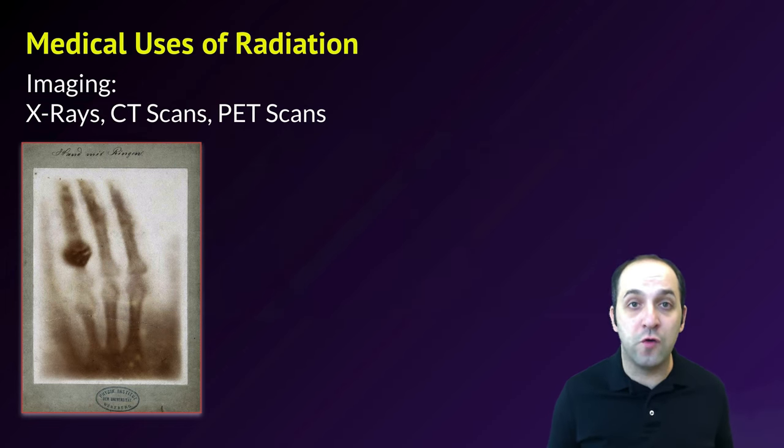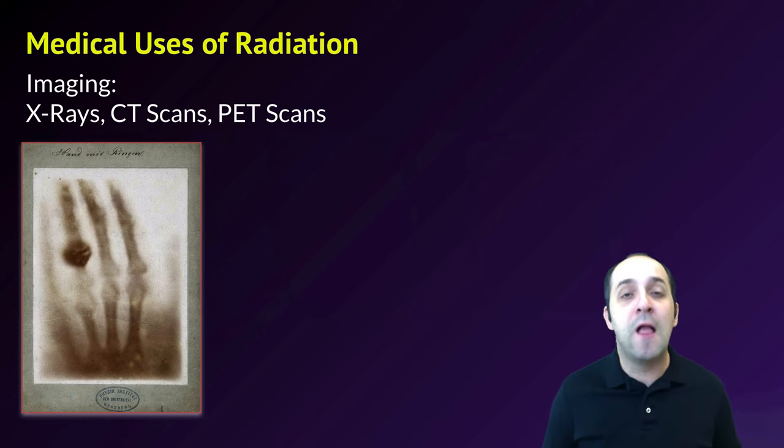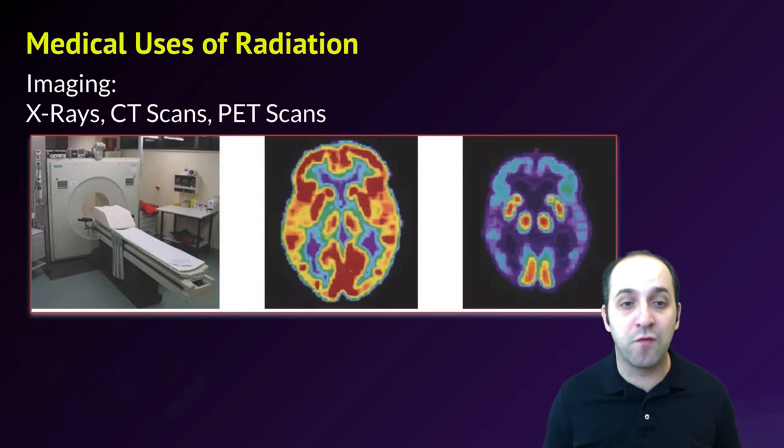CAT scans also use X-rays, and X-rays are a little bit different from the kinds of nuclear radiation that we've been talking about up to this point. They're a lot more like gamma rays, so that high energy form of light. PET scans do use nuclear radiation. The PET stands for positron emission tomography. During a PET scan, you're injected with a radioactive positron emitter, and that positron emitter accumulates in the areas that doctors are interested in visualizing. The PET scanner uses the positrons that are produced from that source to generate an image of the area.